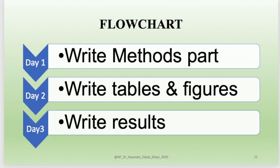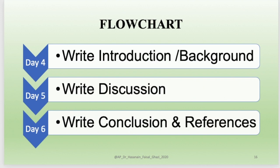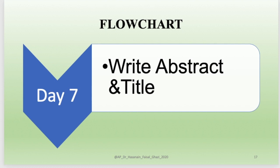To summarize the seven-day workflow in a flowchart: Day one is the methods, day two is tables and figures, day three is the results, day four is the introduction or background, day five is the discussion, day six is the conclusion and references, and day seven is the abstract and title. If you have any questions, put them in the comments below. Thank you for being with us.